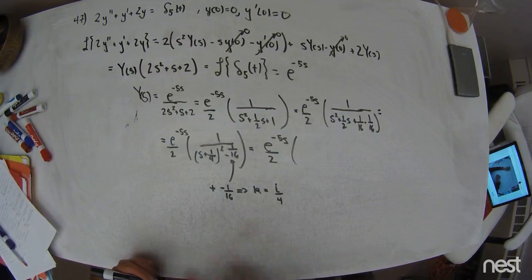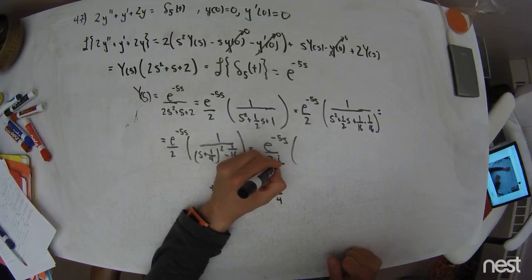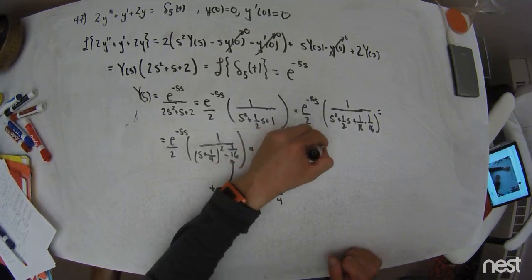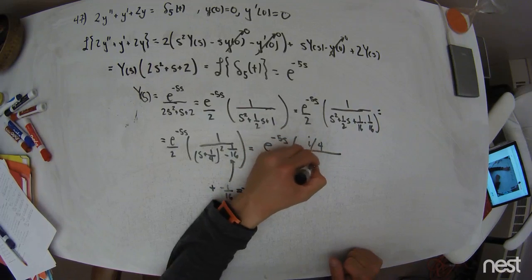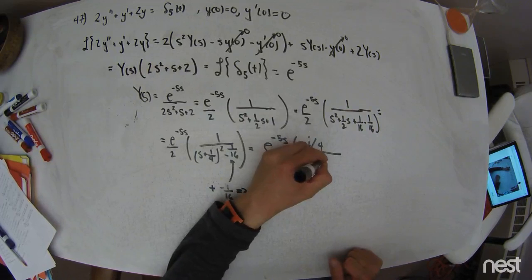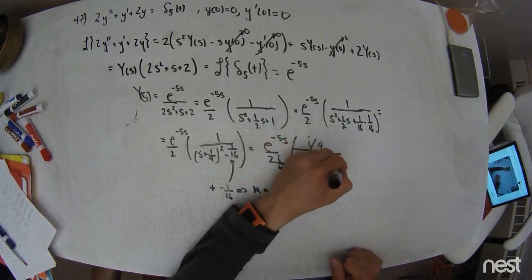And so I need a k in the numerator. That means I'll put a k in the denominator. So there's an i in the denominator over 4. I have an i over 4 in the numerator. And this is s plus 1 half, or 1 fourth squared minus 1 sixteenth.